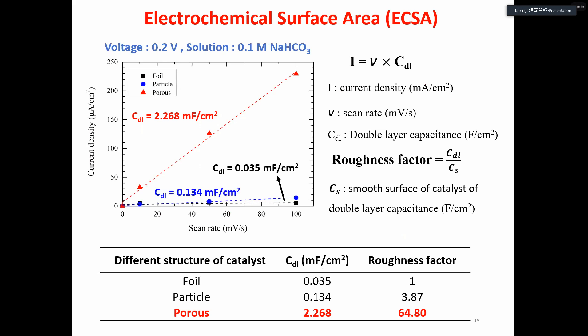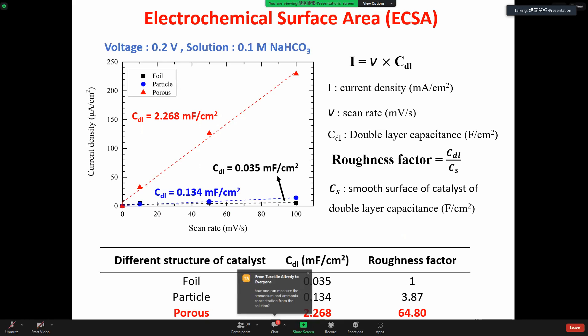To understand why the copper porous catalyst has this remarkable performance, we examined the electrochemical surface area of these three catalysts from a series of CV curves with different scan rates. We can calculate the double-layer capacitance by the slope of current density and the scan rate.